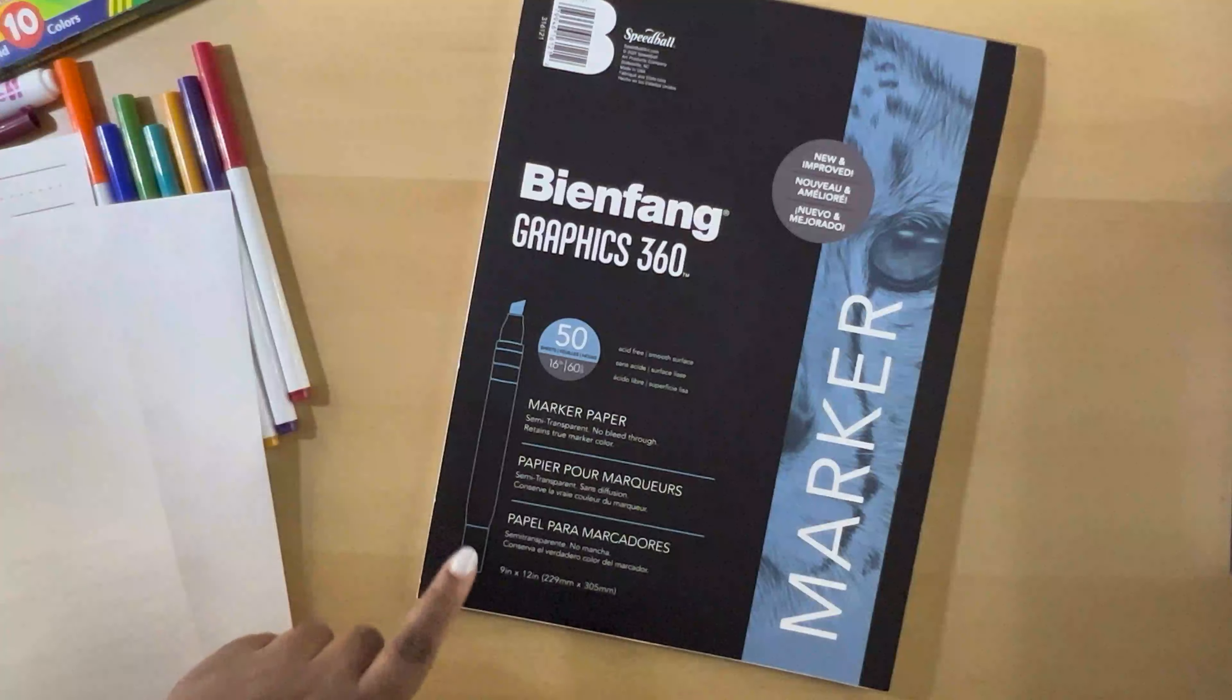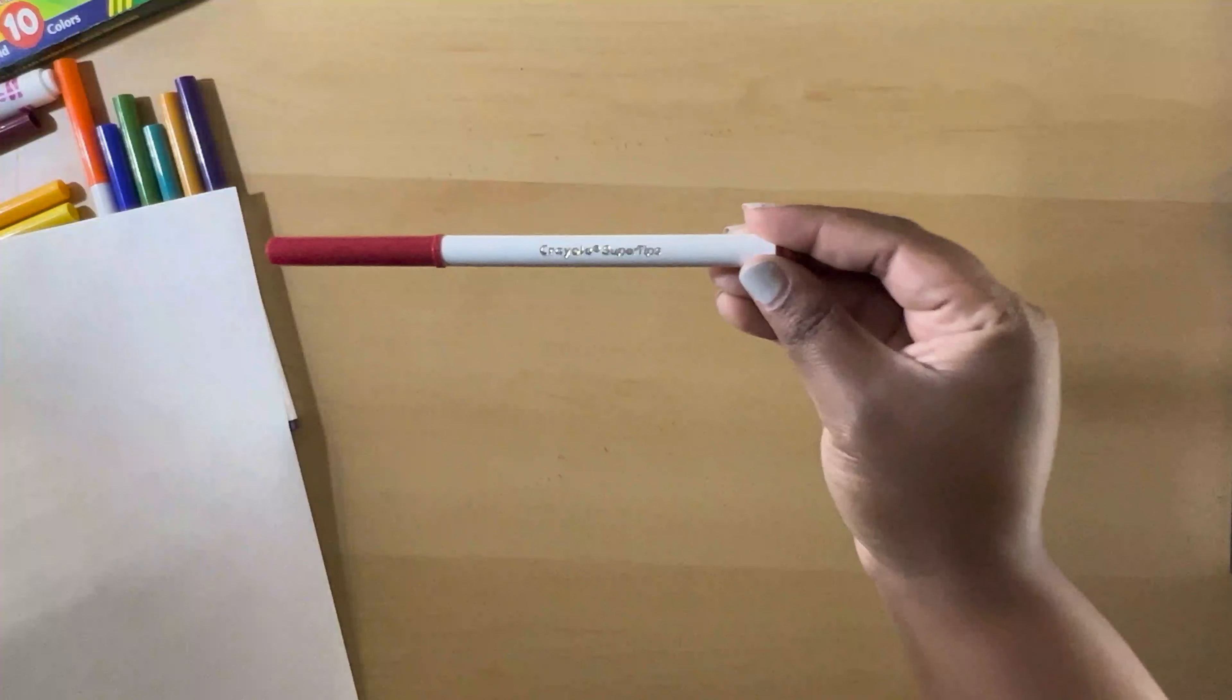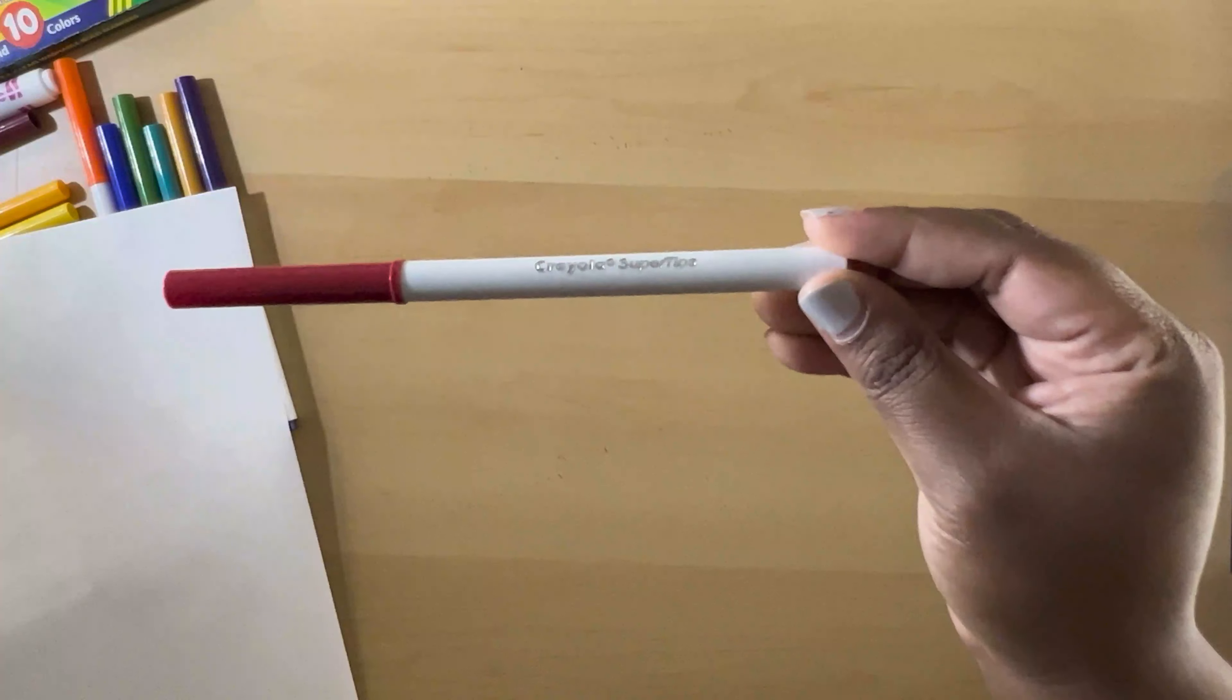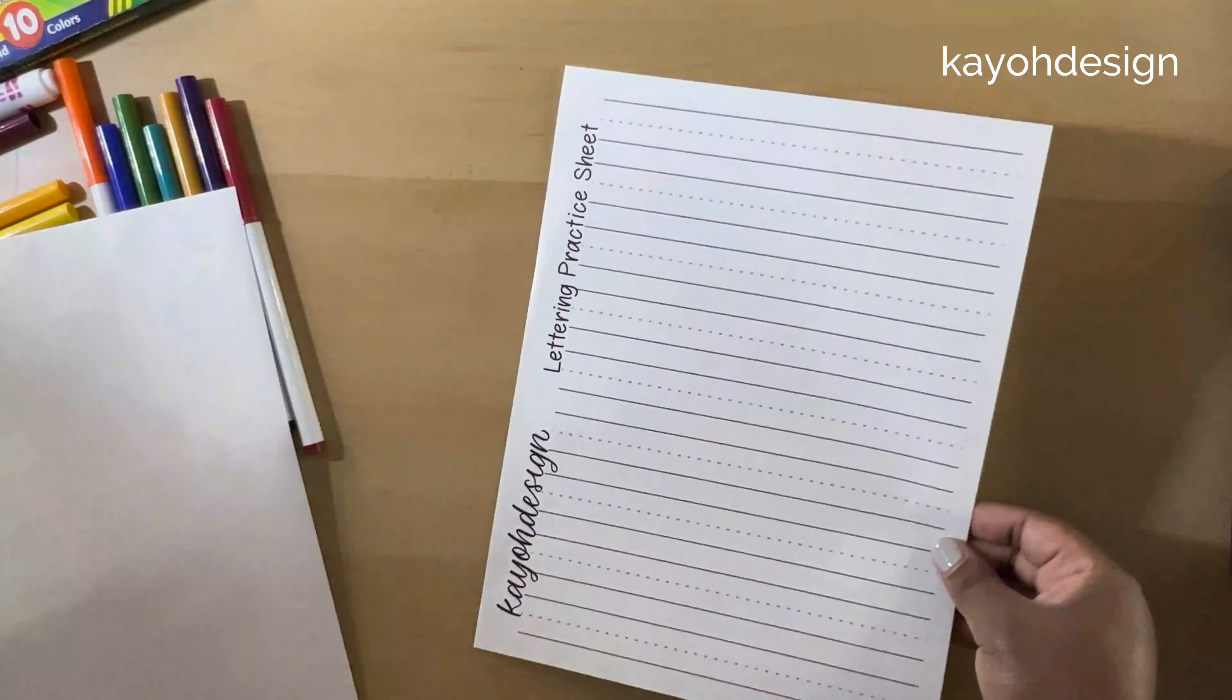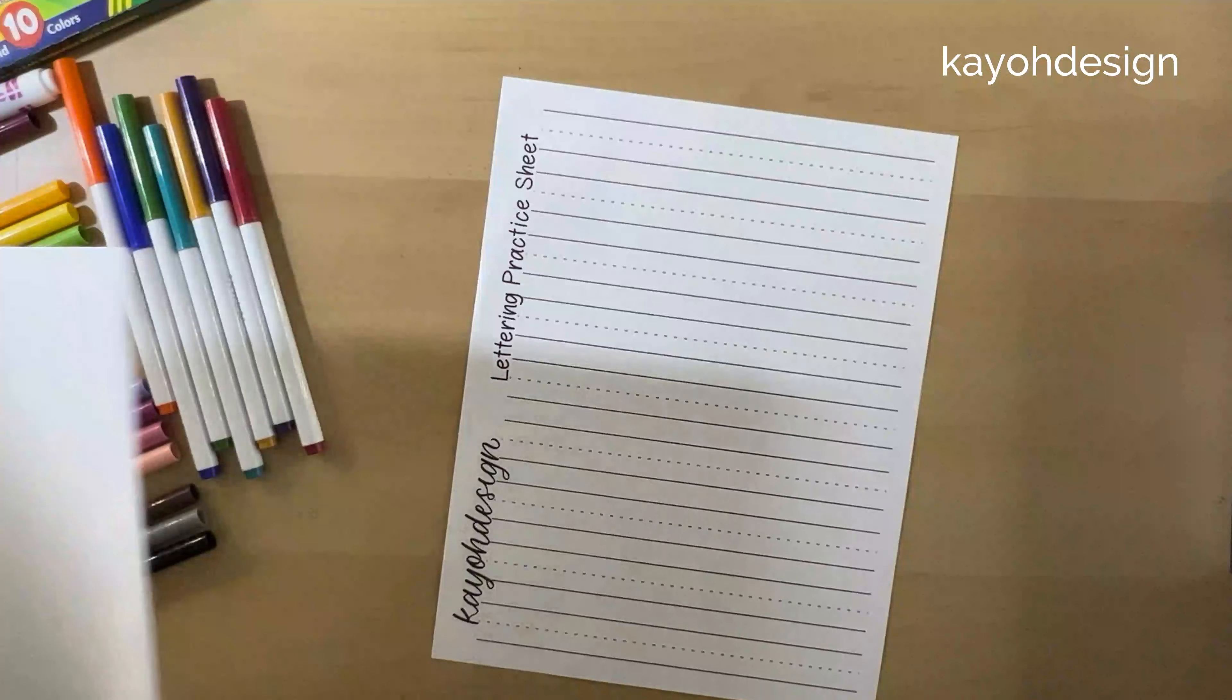So I have my basic strokes sheet right here that I will use for reference. And if you did not watch the last video, I am using the Bien Feng Graphics 360 marker paper, 16 pound, 60 GSM. I am using the Crayola Super Tips as well as this practice sheet. And I'll put the marker paper on top, and the lettering sheet underneath is just reference.